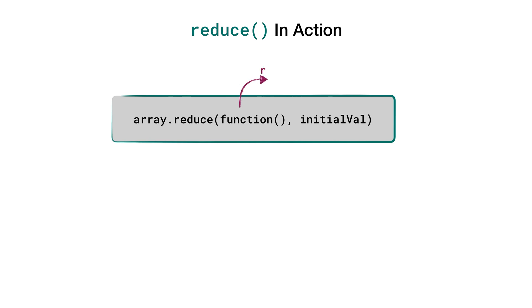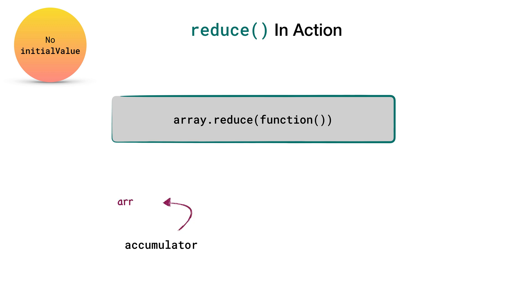If you remember, we learned that reduce method has two arguments, a reducer function and an optional initial value. Now if initial value is not supplied as an argument to the reduce method, the accumulator grabs the first element in the array which becomes the initial value of the accumulator. And the current value will be the second element of the array.